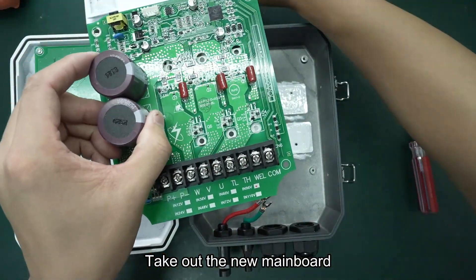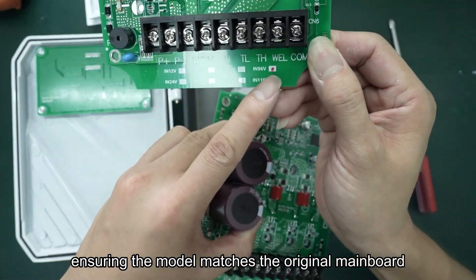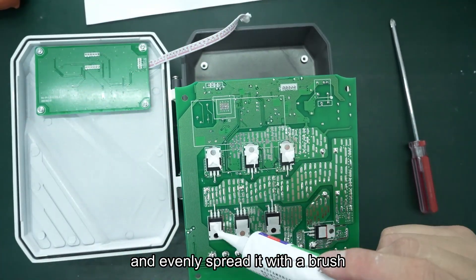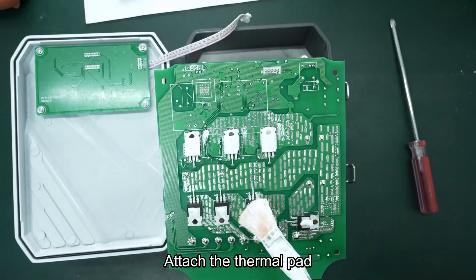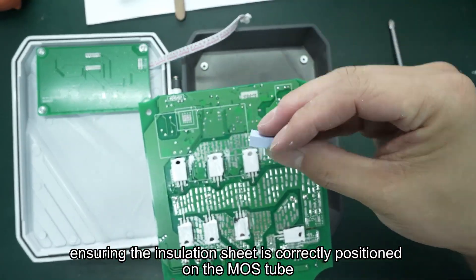Take out the new main board, ensuring the model matches the original. Apply thermal grease to the back of the MOSFET and evenly spread it with a brush. Attach the thermal pad, ensuring the insulation sheet is correctly positioned on the MOSFET.